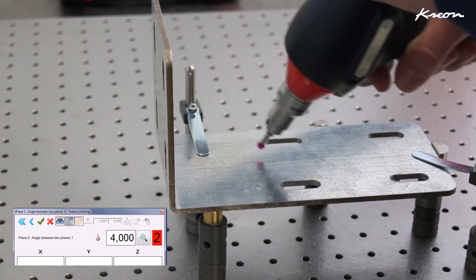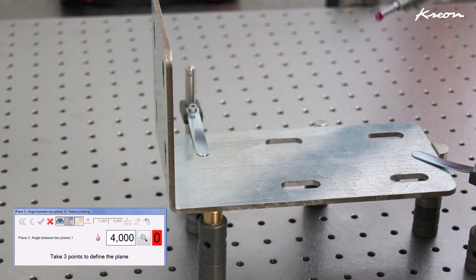Now we will measure the folding angle of the part using the plane to plane angle function.